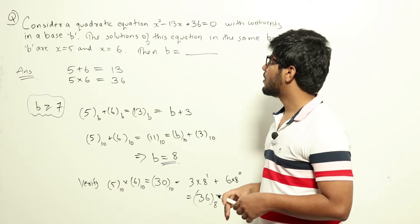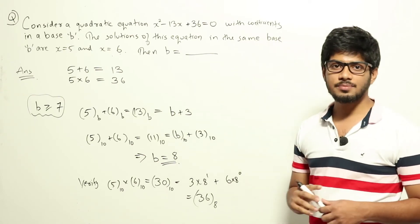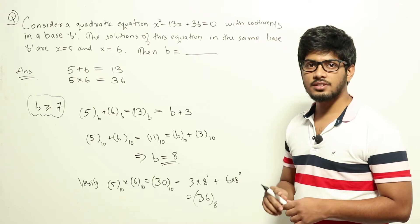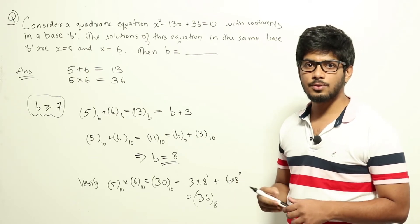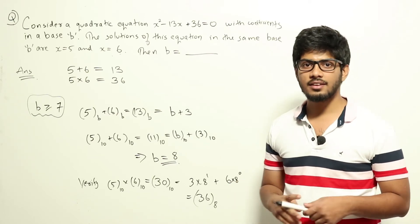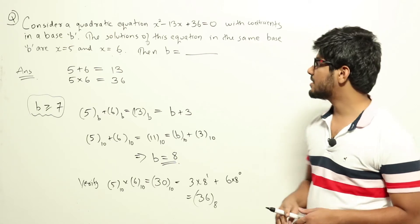Now suppose we have a quadratic equation ax squared plus bx plus c. If we have two solutions also given, then sum of the solutions would be equal to minus b by a, and the product of the solutions will be c by a.